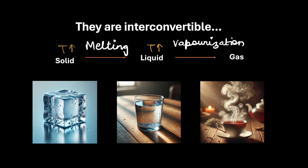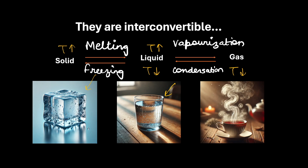We can cool down a particular gas. For example, if we cool down the steam, it converts into water — gas can be cooled down to liquid, and this process is called condensation. And if we further lower the temperature of liquids, they can be solidified. For example, if we lower the temperature of liquid water, it will convert to ice. This process is called freezing.